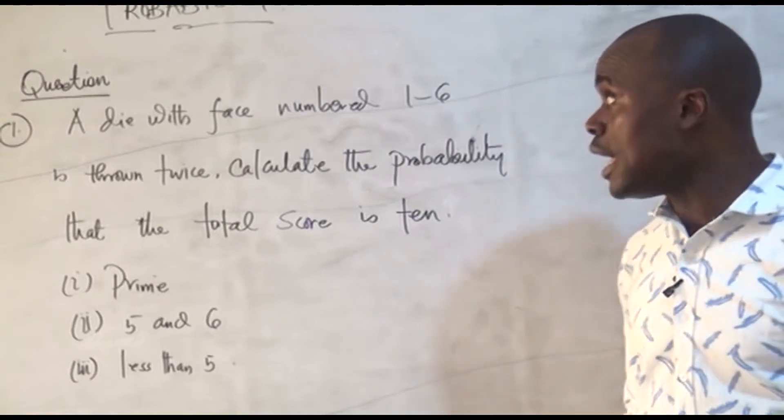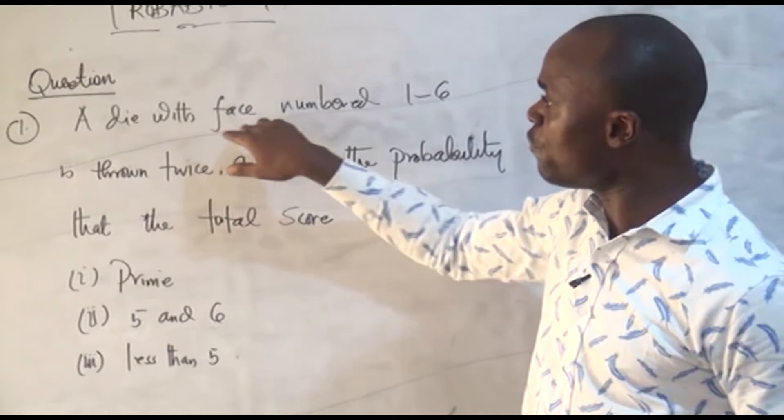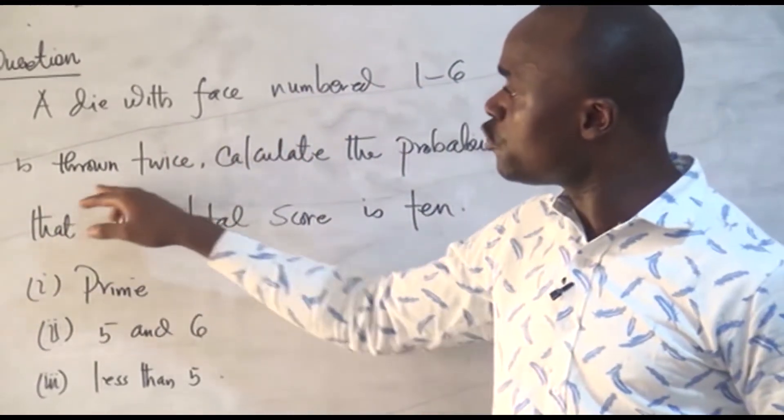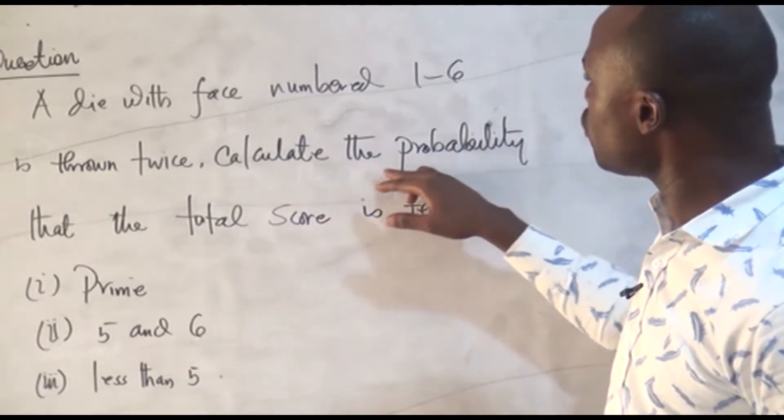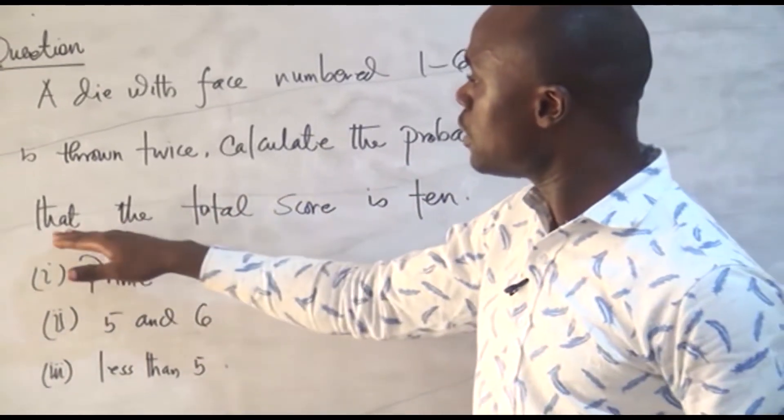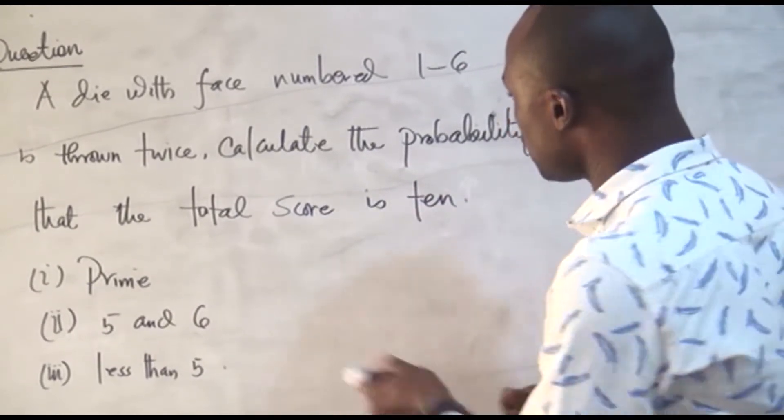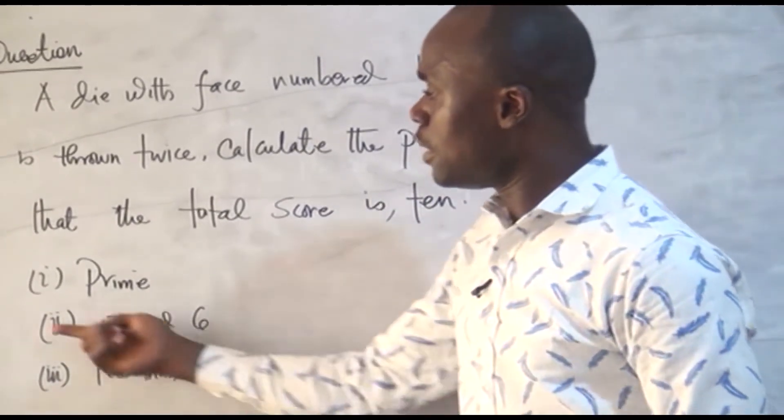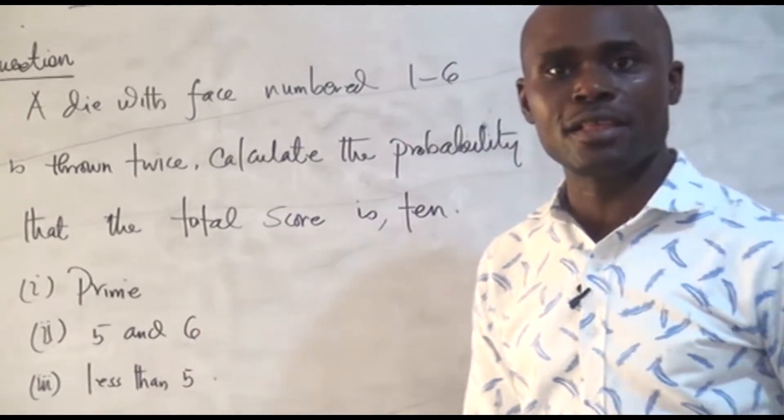And this is the question: A die with face numbers 1 to 6 is thrown twice. Calculate the probability that the total score is 10. Also, this is one of the questions: is 10, others are prime, 5 and 6, and is less than 5.